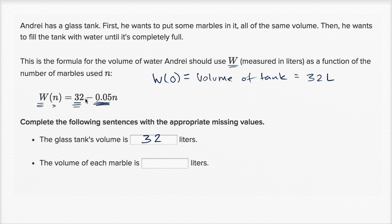You see that? You have minus 0.05 times n. So every time n grows by one, you have to put in 0.05 fewer liters of water. Which implies that the marble is 0.05 liters. That's its volume.